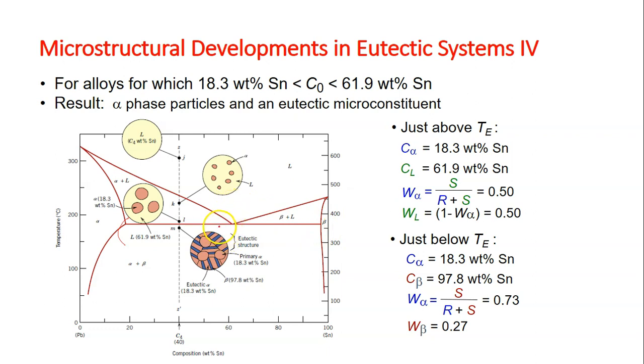From 18.3 to 61.9 weight percent at the eutectic point. Let's consider this composition C4, which has 40 weight percent Sn.